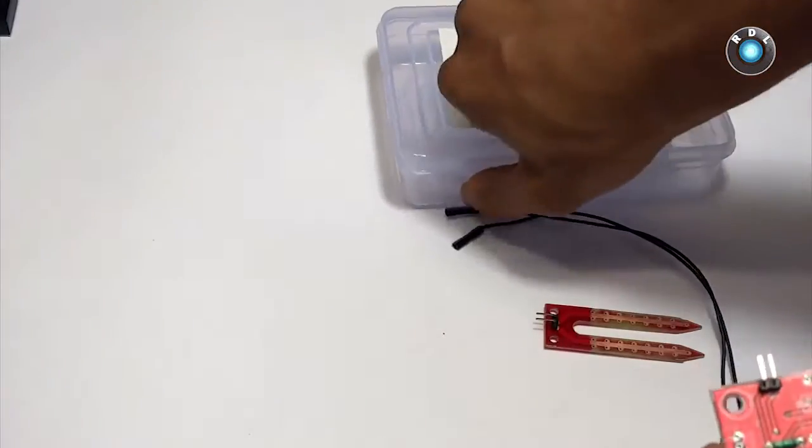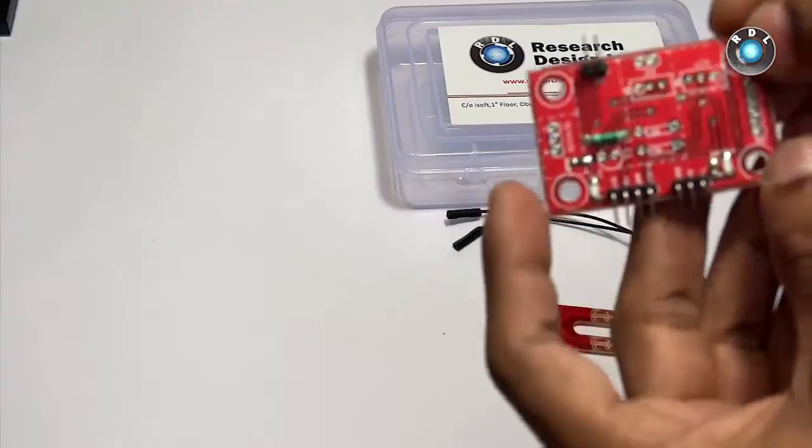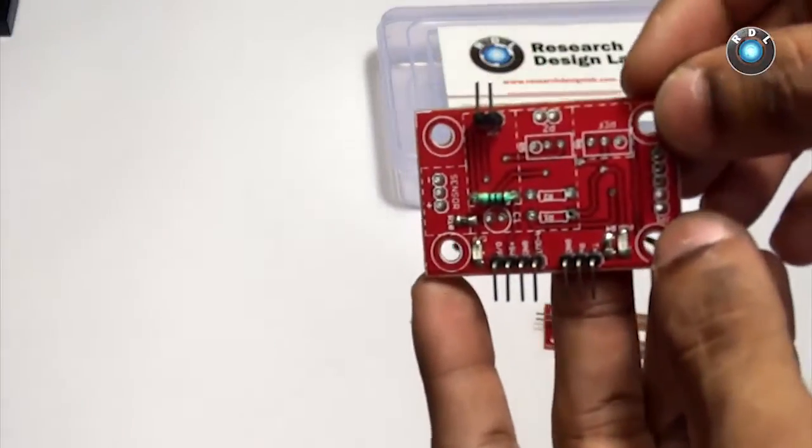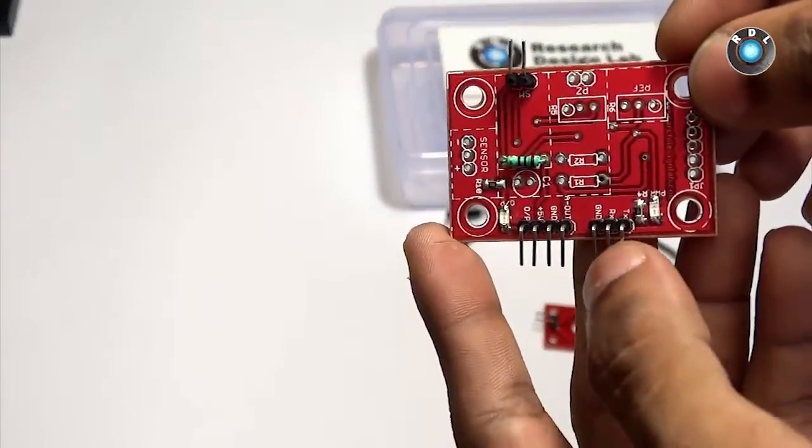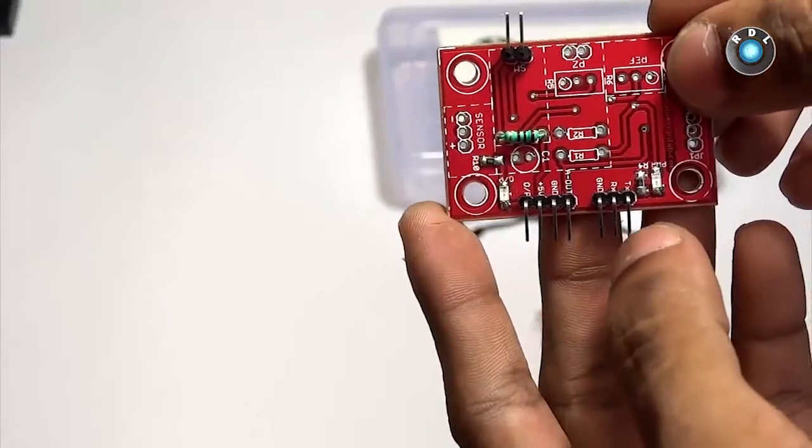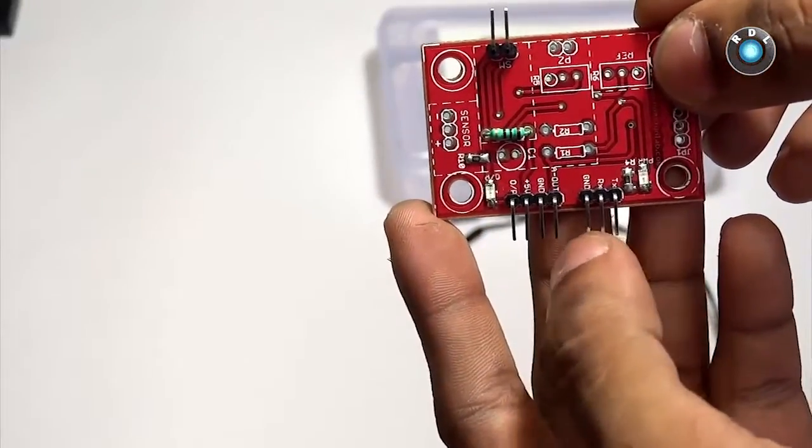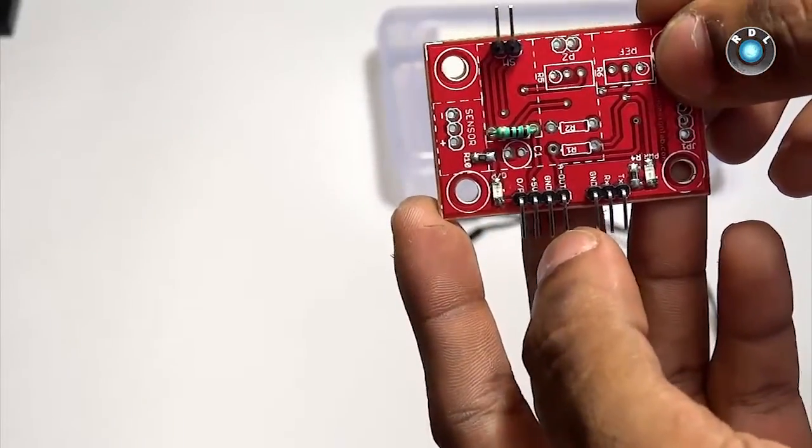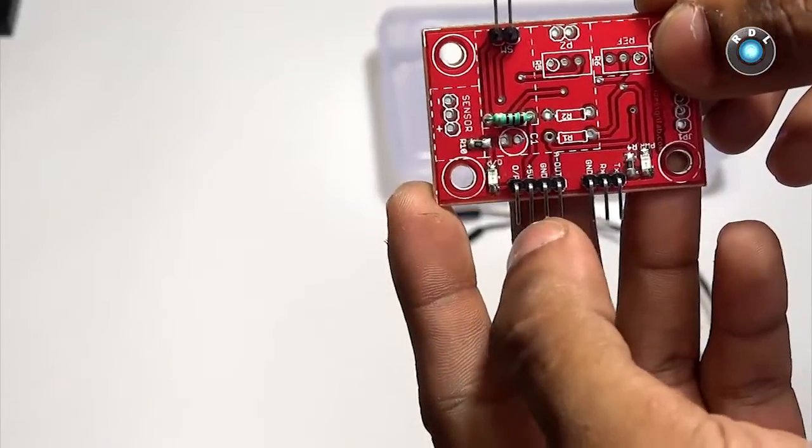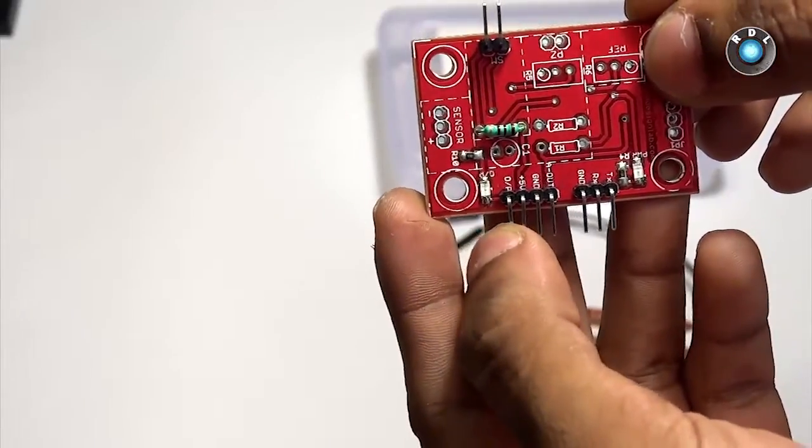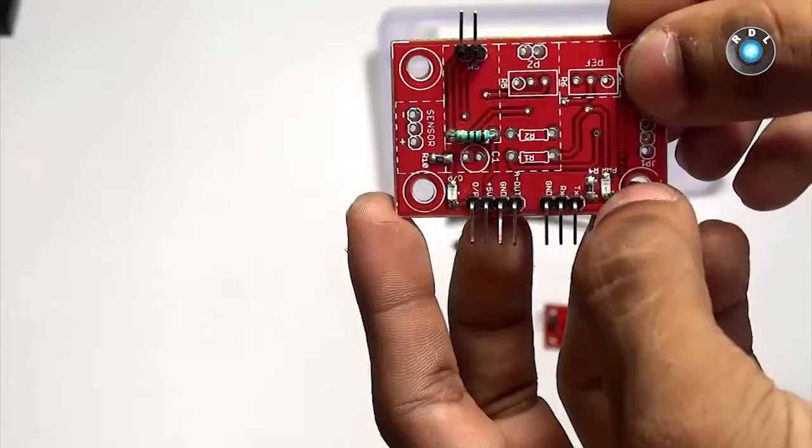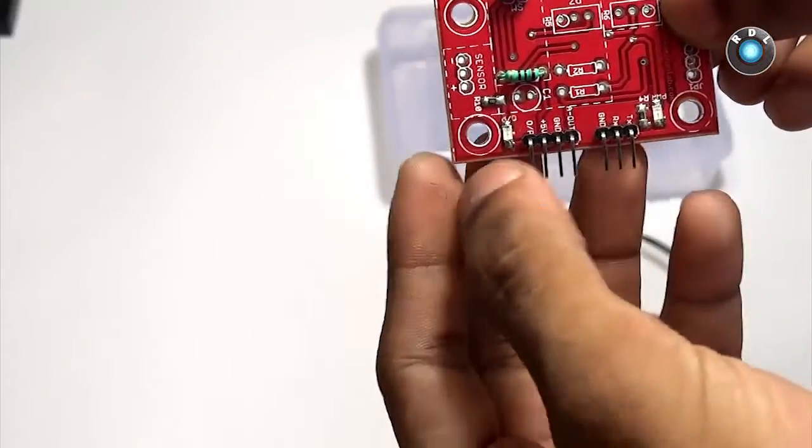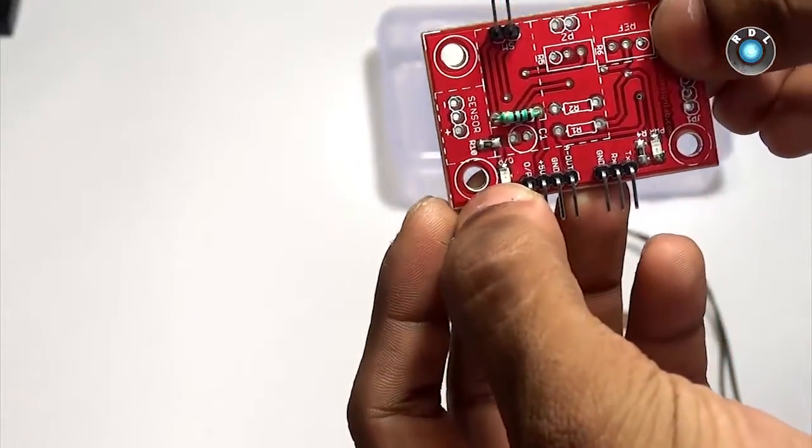As you can see here, this sensor board has the following headers. At the right hand side here, I have the TX pin, then the RX followed by the ground connection. Then I have an analog out, again a ground terminal, a plus 5 volt power header and a digital output pin. This LED here indicates the power status and this one over here indicates the digital out pin status.